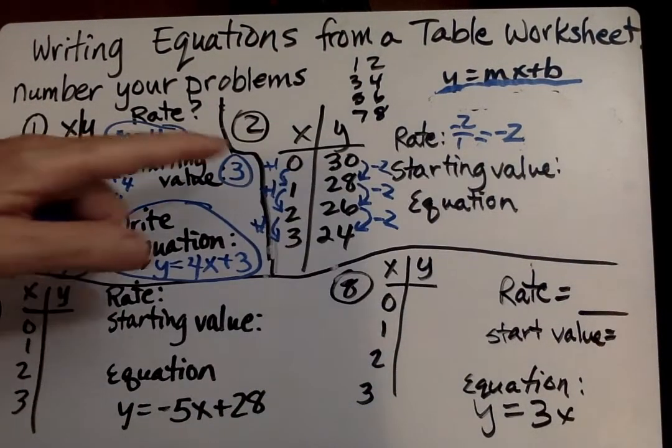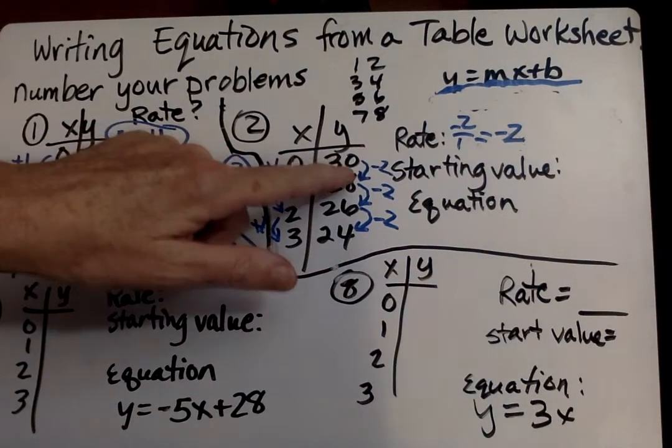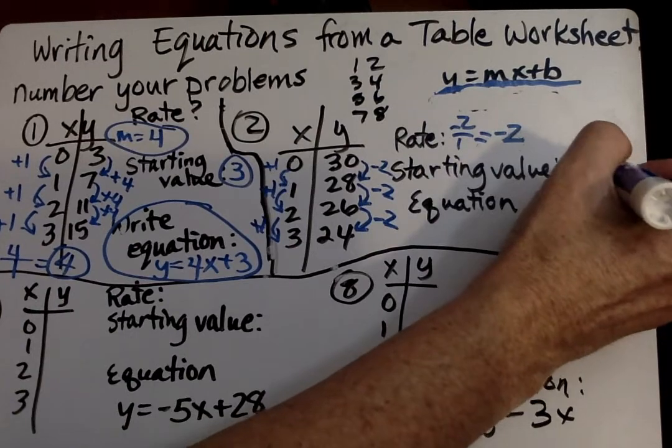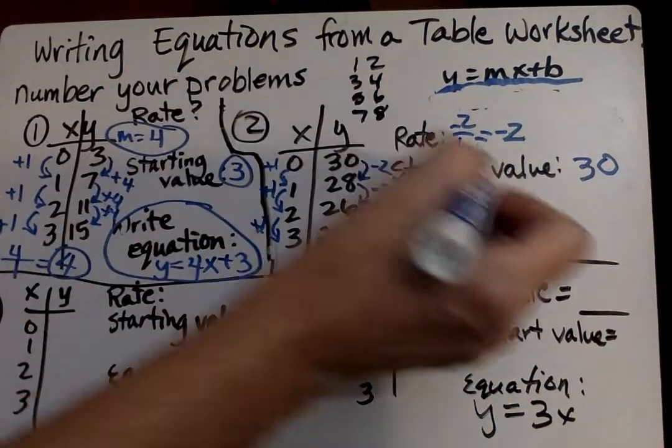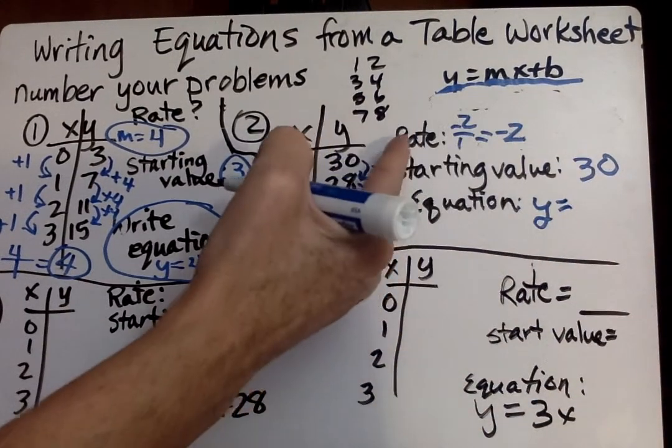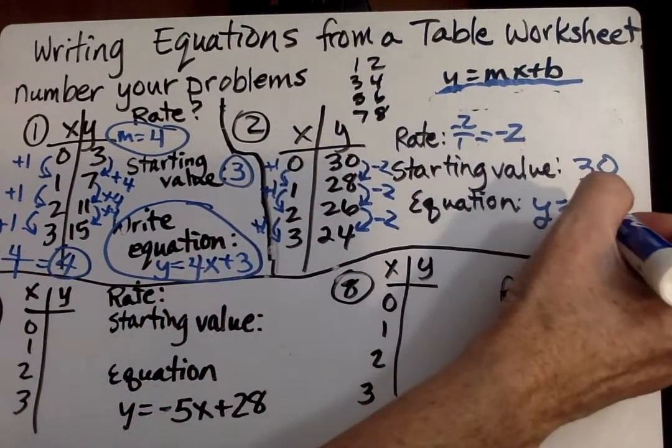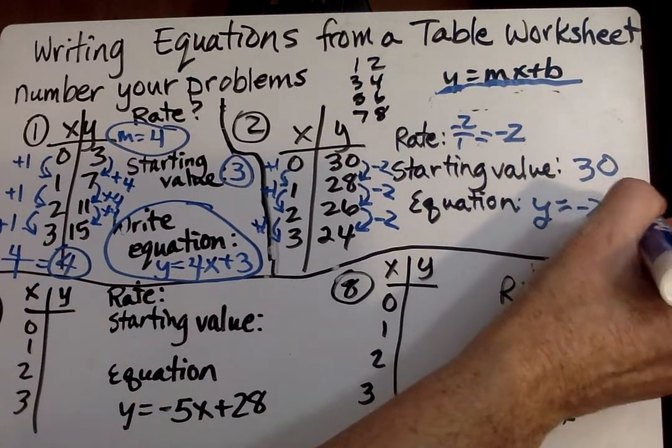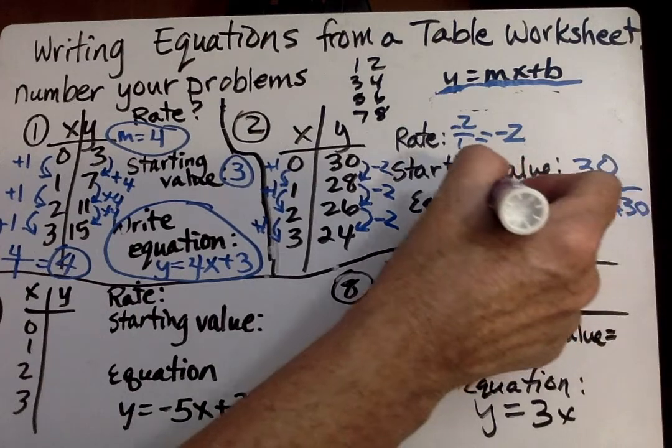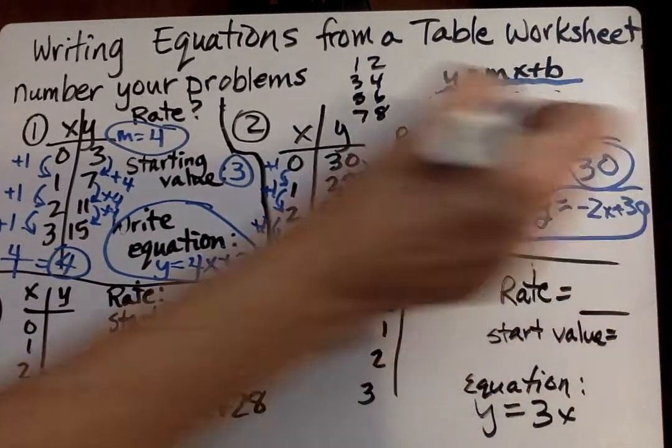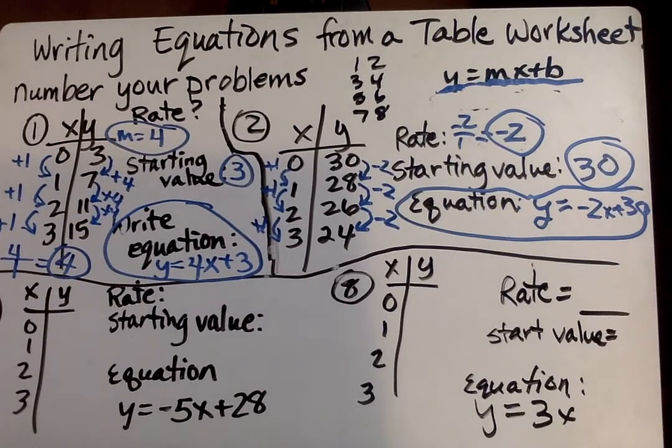Our starting value is, when X is 0, what's Y? 30. Then we write our equation. Y equals M, or the rate of change, negative 2X plus 30. And there's your 3 answers there.